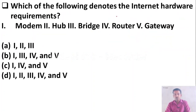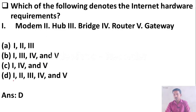Which of the following denotes internet hardware requirements? Option A: Modem, Option B: Hub, Option C: Bridge, Option D: Router, Option E: Gateway. The right answer is all of the above — Modem, Hub, Bridge, Router, and Gateway are all internet hardware requirements.